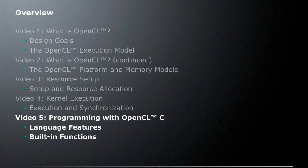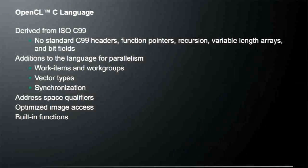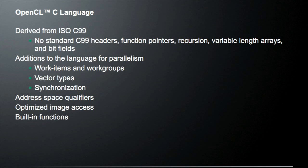The OpenCL C language is actually quite verbose, and I won't have time to go into all the details in this presentation. I highly recommend you go to the Khronos website and download the spec if you're interested in all the details. OpenCL C is based off of ISO C99, but there are a couple of restrictions: no standard C99 headers, no function pointers, no recursion, no variable length arrays, and no bit fields.